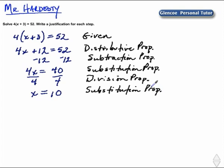So we've solved our algebraic equation, x is equal to 10, and we've justified each step along the way.